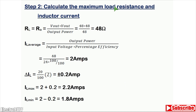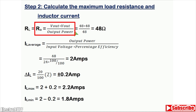Then you need to calculate the maximum load and the inductor current. Load is maximum when the output resistance is minimum. The load resistance equals V out squared divided by the output power — in this case 48 squared over 48 watts, giving 48 ohms. Because the efficiency is 100%, output power equals input power. Otherwise, output power would be less than input power due to MOSFET switching losses and diode losses.